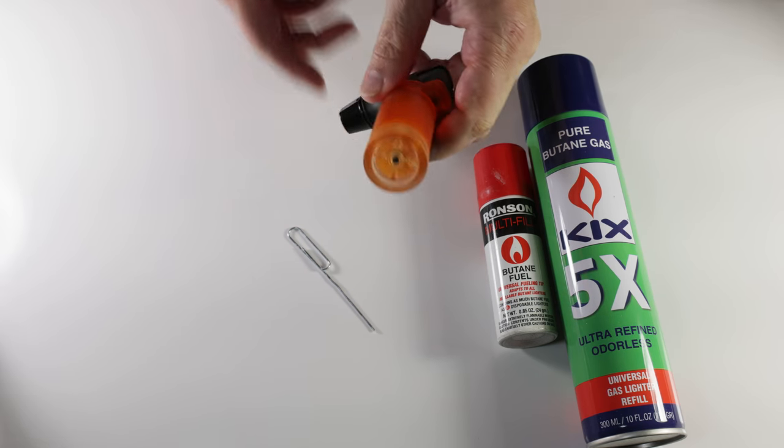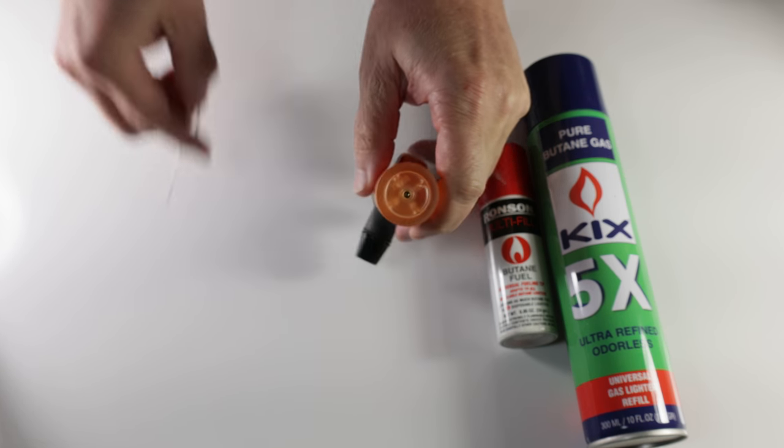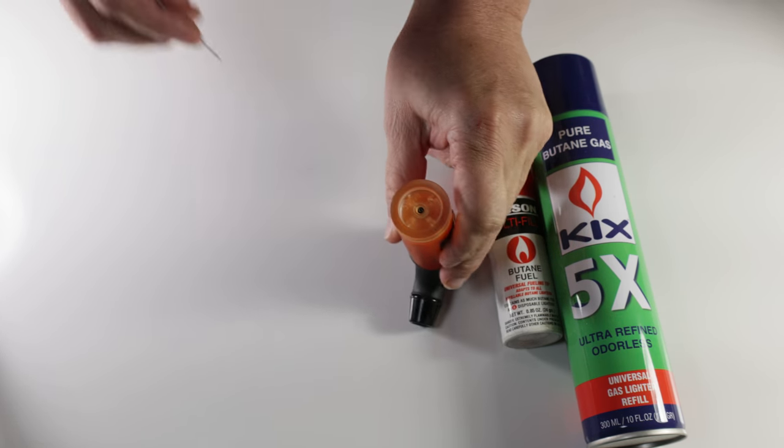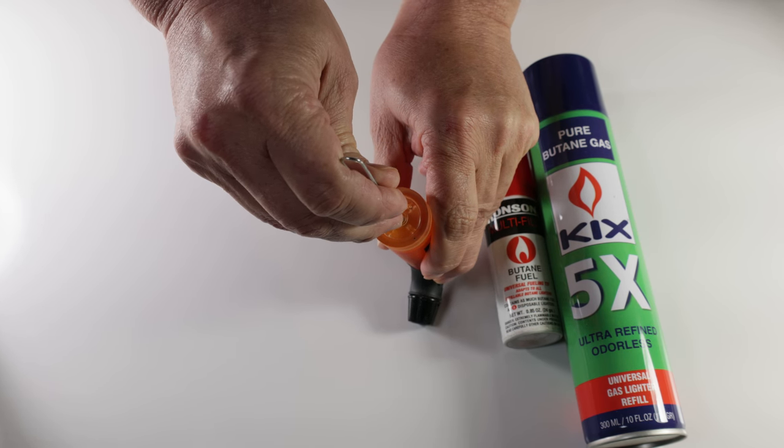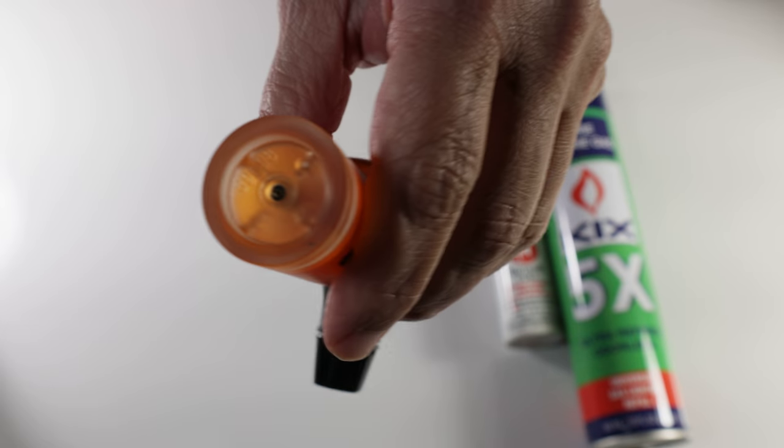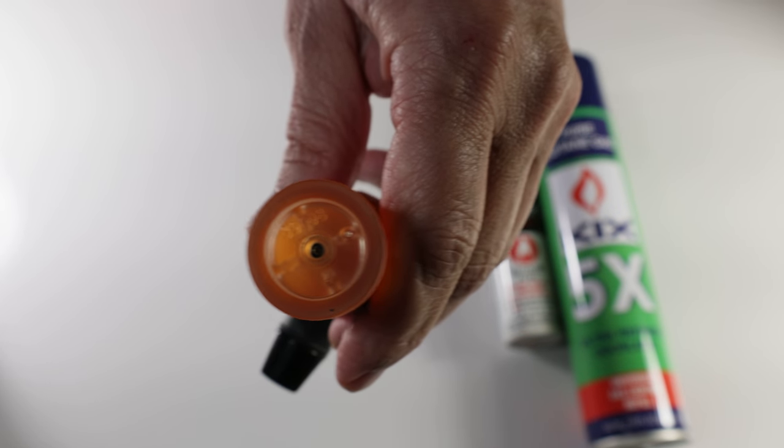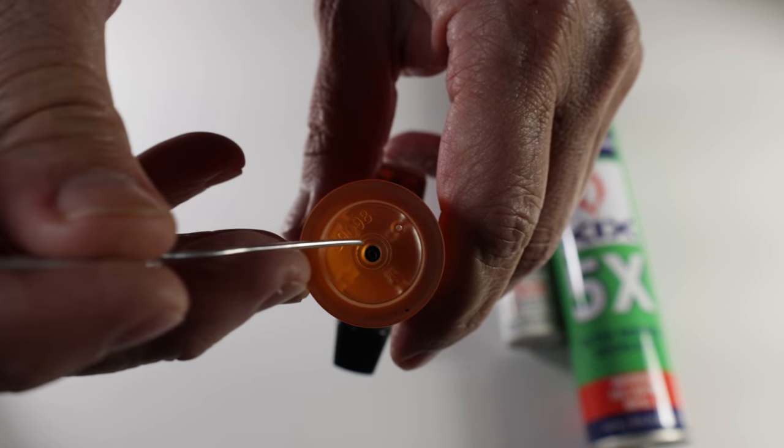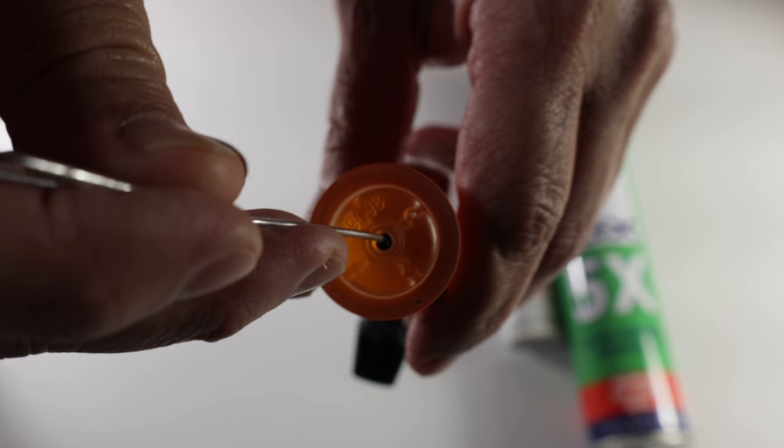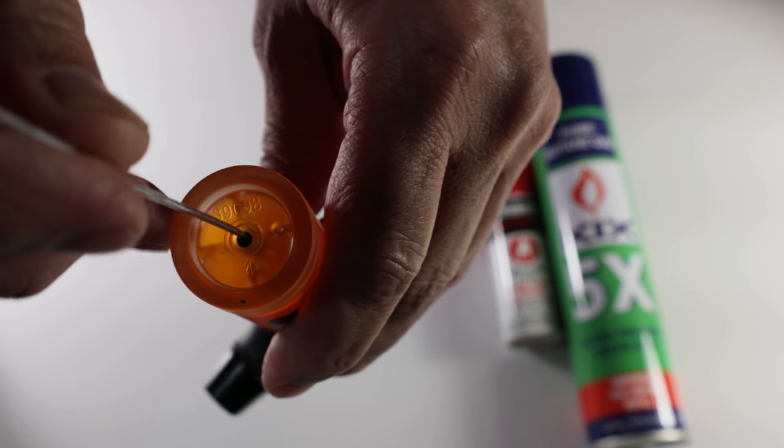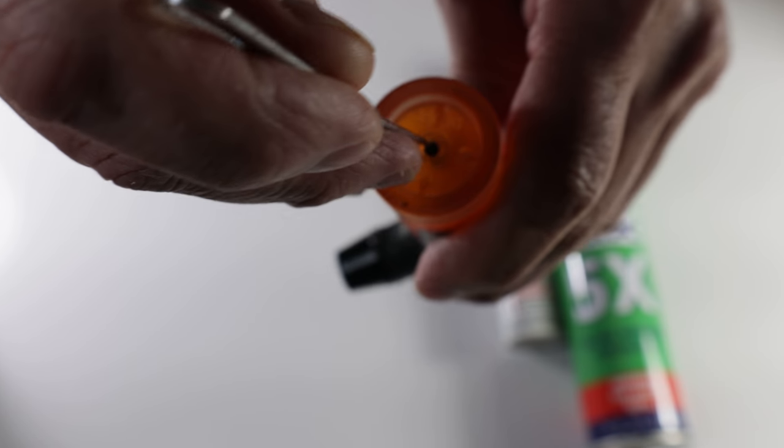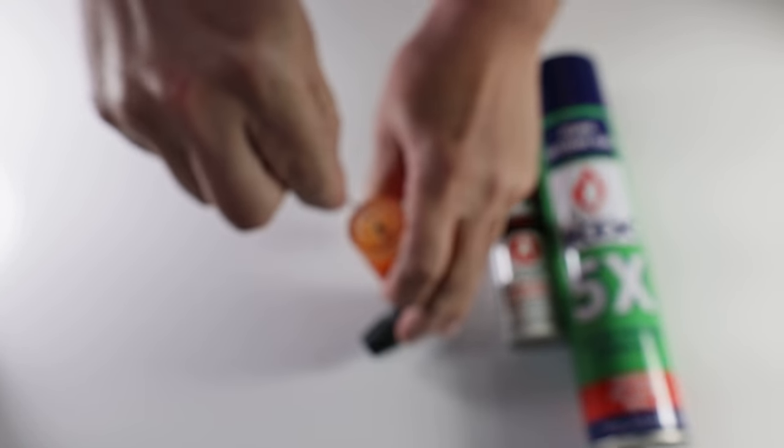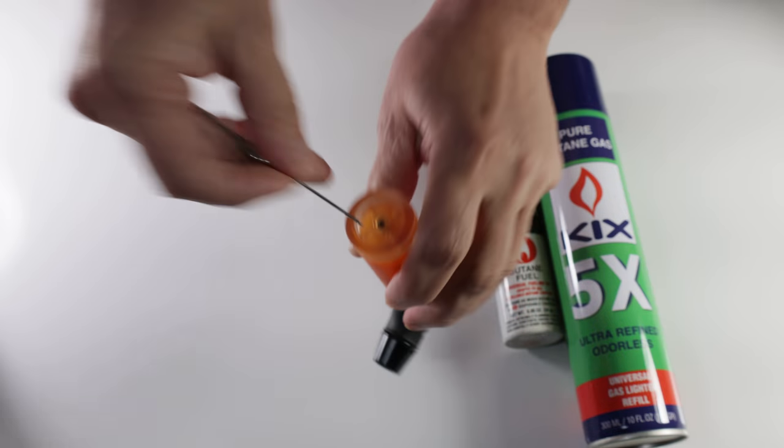What you've got to do first of all with any lighter is purge it. Get a paperclip, and you can see right there where the tank is and the valve where you want to purge it. You want to put it...